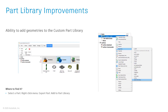We have also made improvements to our part library. The part library allows you to drag and drop commonly used parts into your platform. In the past, this was a pre-populated list. In this release, users can save their commonly printed parts into their own custom library for quick access.